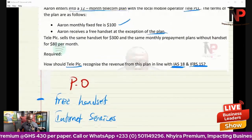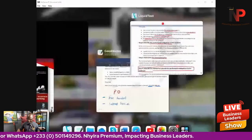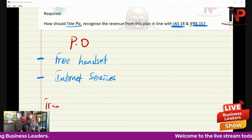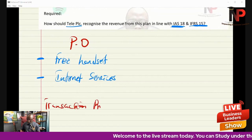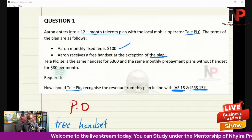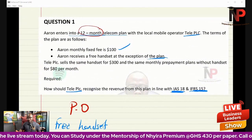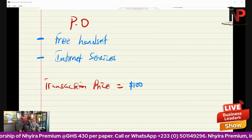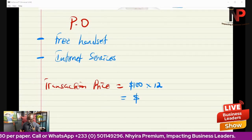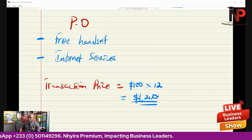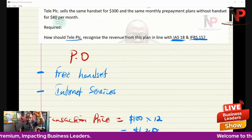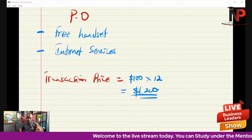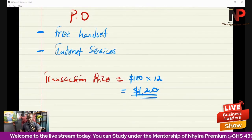Step three: determine the transaction price. Aaron pays $100 per month for 12 months, so the transaction price is $100 × 12 = $1,200.